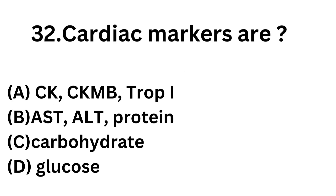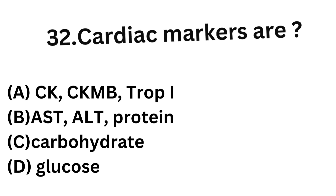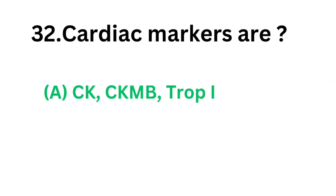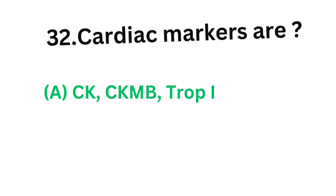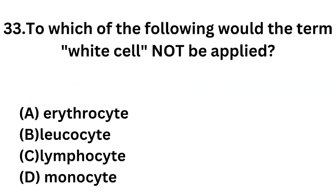Question number 32: Cardiac markers are — Option A: Creatine kinase, CKMB, troponin. Option B: AST, ALT, protein. Option C: Carbohydrate. Option D: Glucose. The correct answer is Option A, CK, CKMB, and troponin. These tests are known as cardiac markers. Doctors can diagnose cardiac diseases by these tests.